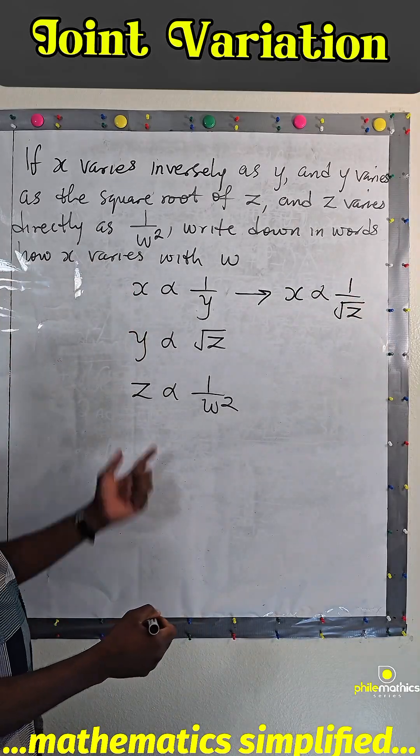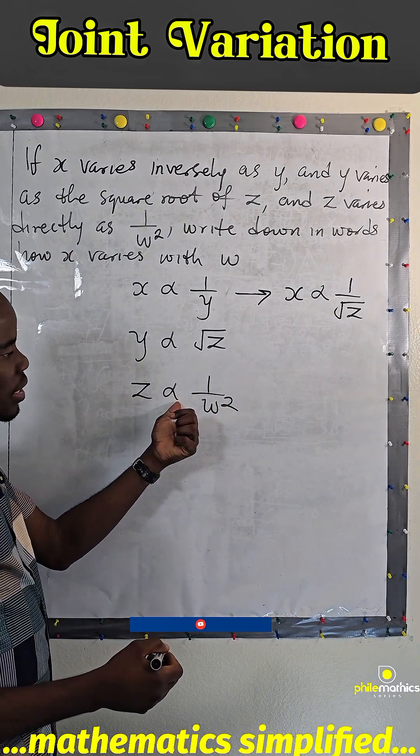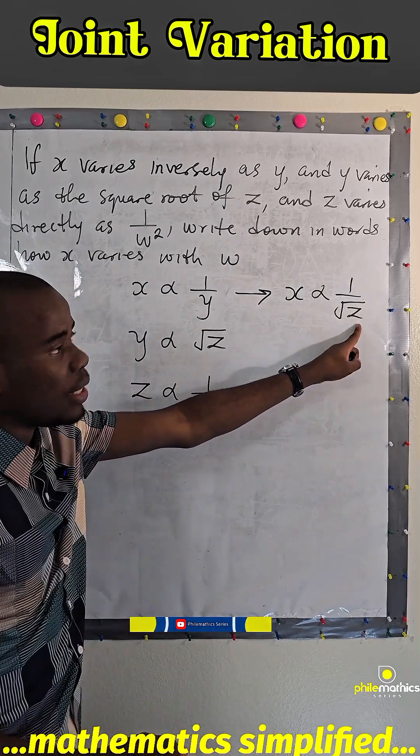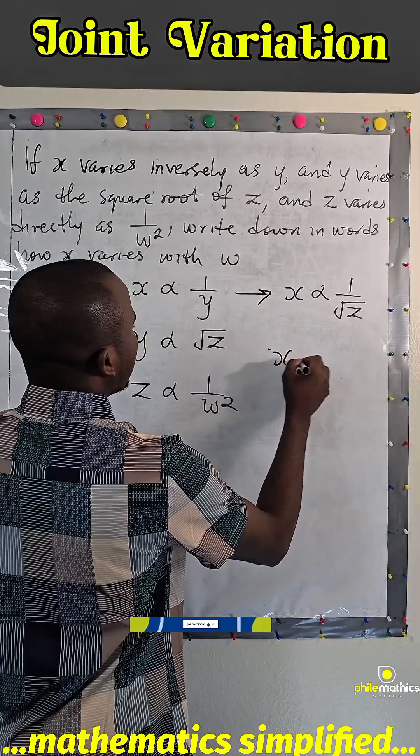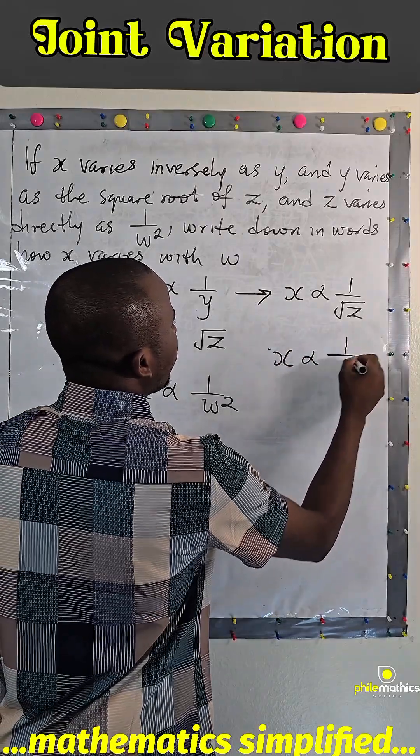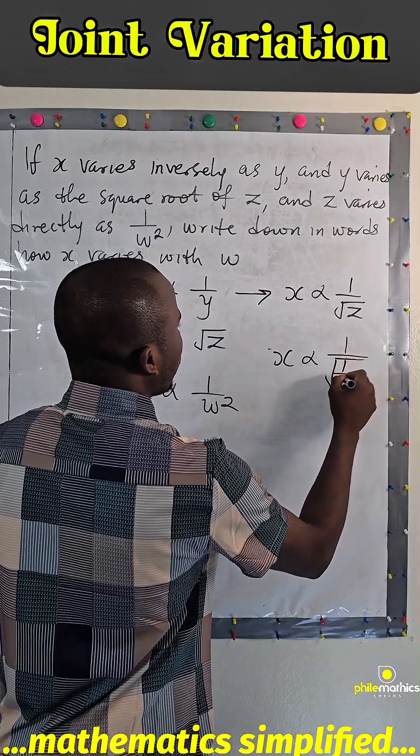And again, we see that z varies as 1 over w squared. I can substitute 1 over w squared here, so that I will have x varies as 1 over square root of 1 over w squared.